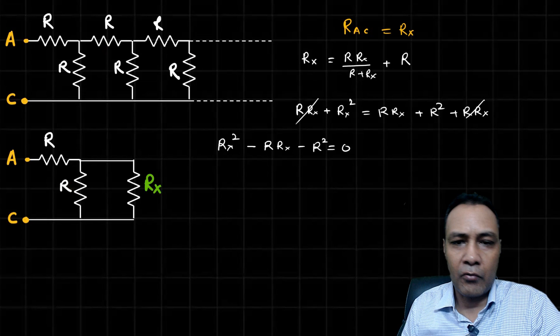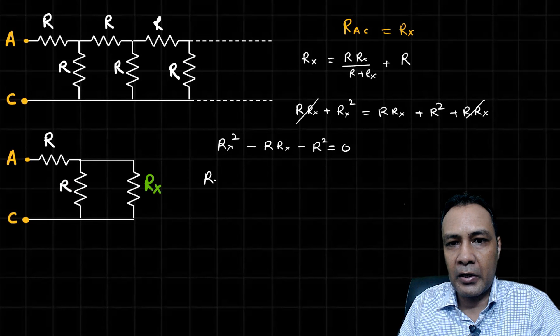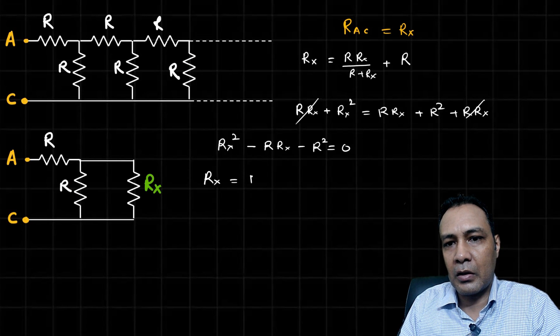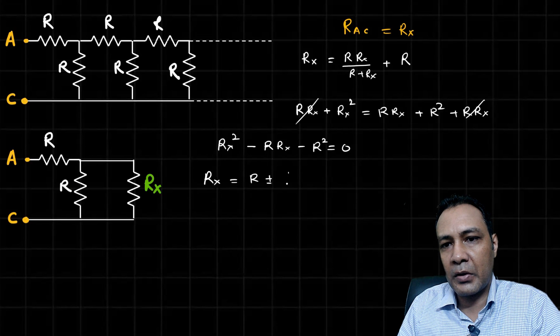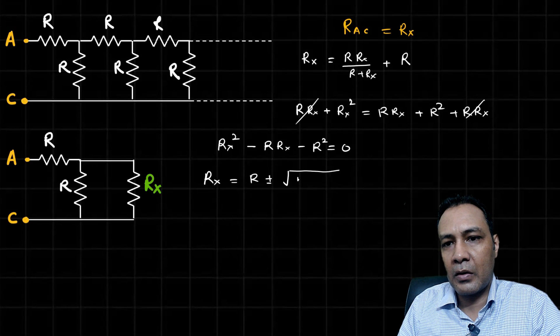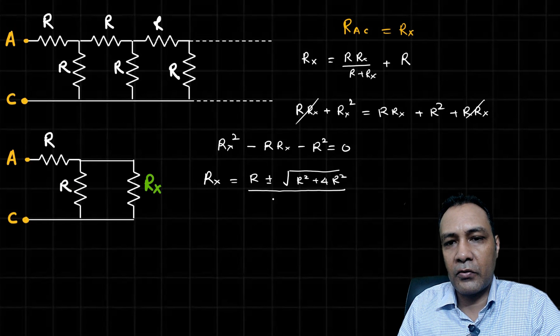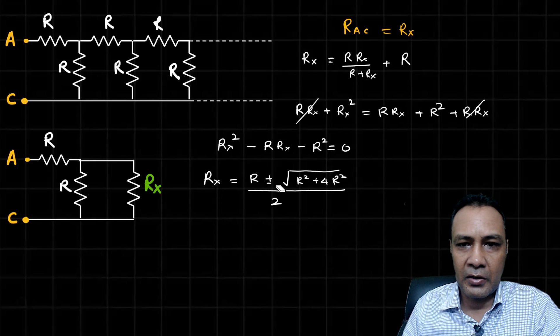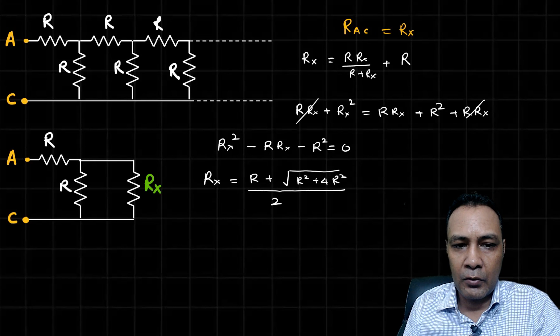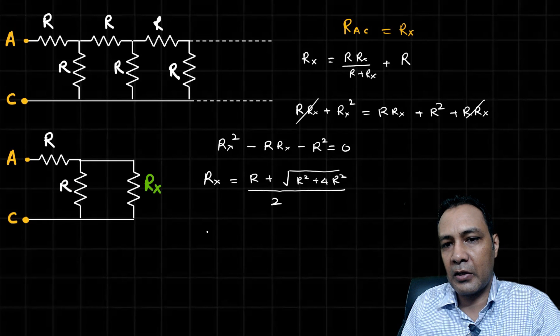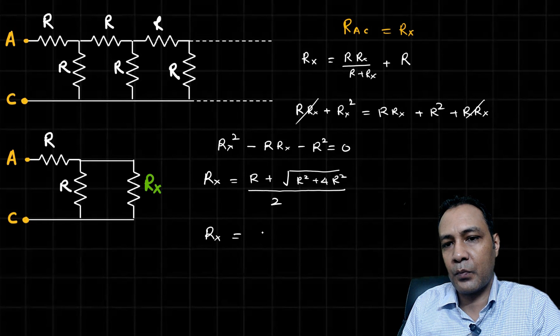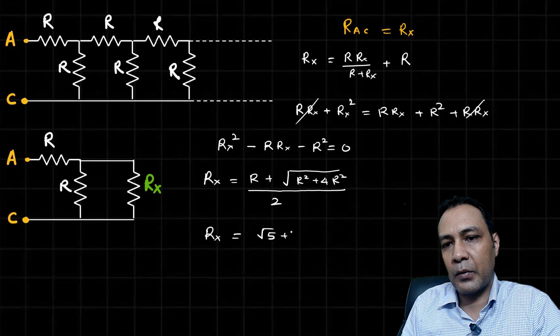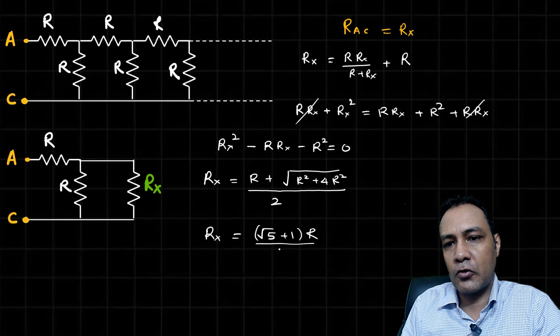This is a quadratic equation. Solution would be R_X equals R plus minus square root of R squared plus 4R squared, divided by 2. Resistance can't be negative, so I will discard the negative root. We'll get R_X is equal to root 5 plus 1, times R by 2.